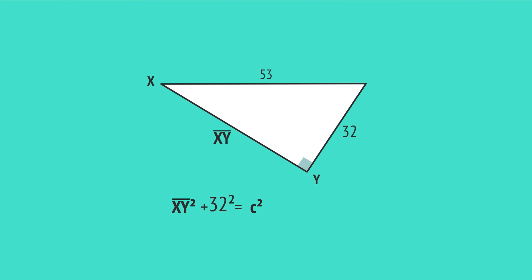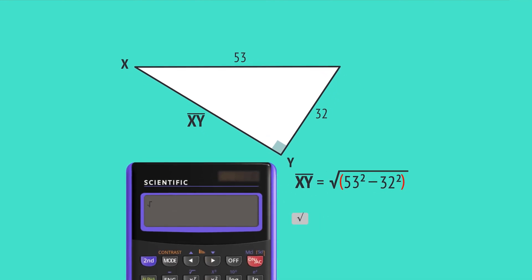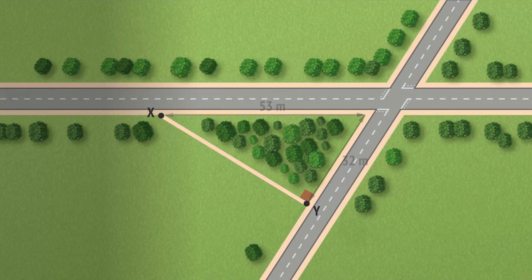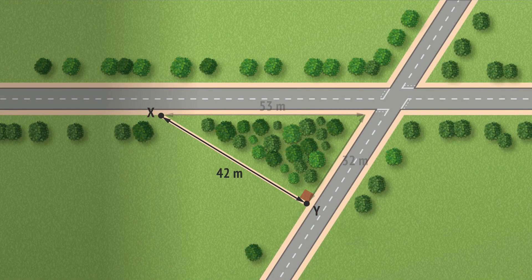Substitute the values into the formula, and subtract 32 squared from both sides to get x y squared on its own. Take the square root to give the calculation for x y, and enter this into a calculator, making sure to use brackets under the square root. This tells us the length of x y is 42 rounded to the nearest metre, meaning the footpath is 42 metres long.